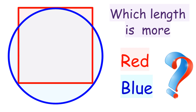In today's question we have to find which is bigger: the blue line or the red line. From one glance it looks like the circumference of the circle is bigger than the perimeter of the square, but the question is, is it so? Let's find the circumference and perimeter and compare the two.